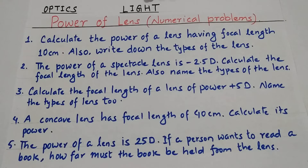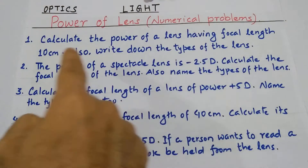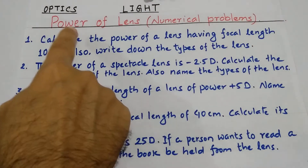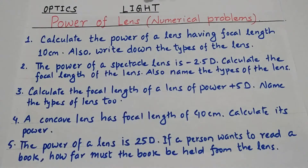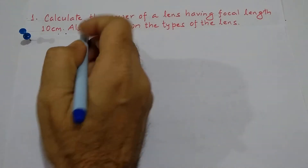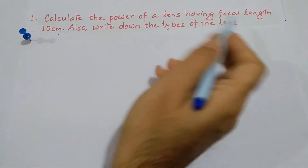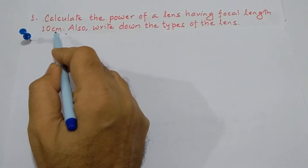Welcome back to NG Academy. Today our agenda is to solve numerical problems. There are altogether five numerical problems from power of lens. Number one: calculate the power of a lens having focal length 10 centimeter.